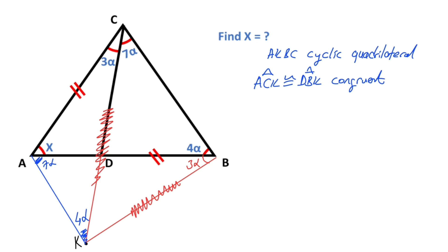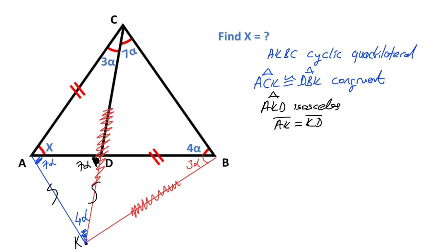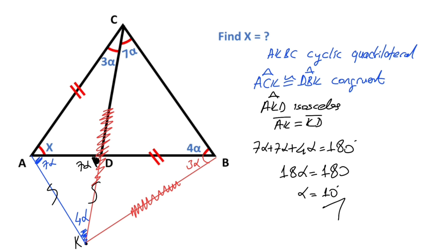We know that congruent triangles have the same sides and angles. Therefore, if there is a side opposite the 3 alpha, the opposite side of the 3 alpha must be equal — the same side. That means we have an isosceles triangle. So AK must be equal to KD. Here must be equal 7 alpha, and if you focus on triangle ADK, we know that the sum of interior angles equals 180 degrees. So 18 alpha equals 180 degrees, therefore alpha is going to be 10 degrees. This was the first method.